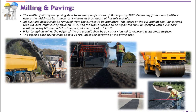Number two: all dust and debris shall be removed from the surface to be asphalted. The edges of the cut asphalt shall be sprayed with cut-back rapid curing bitumen, also known as RC2, and the whole surface to be asphalted shall be sprayed with cut-back medium curing bitumen, known as MC2.